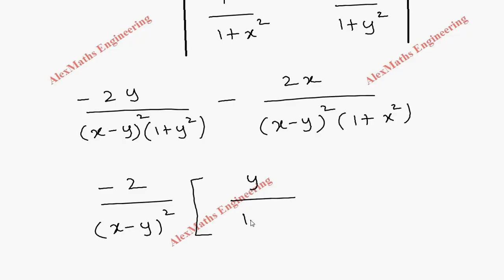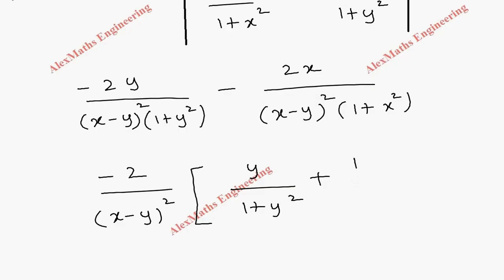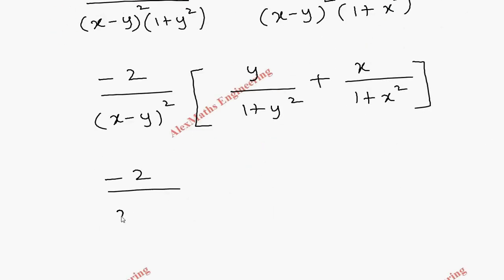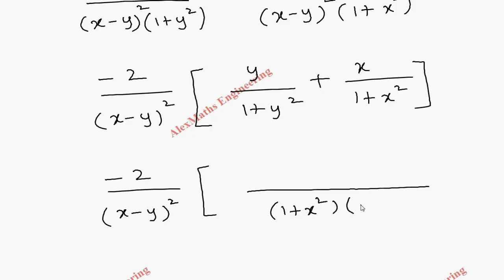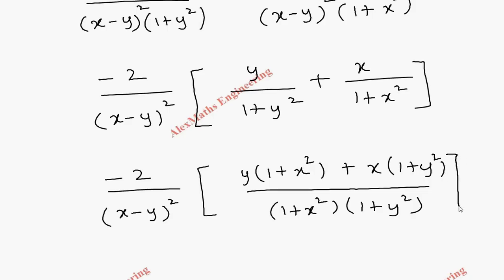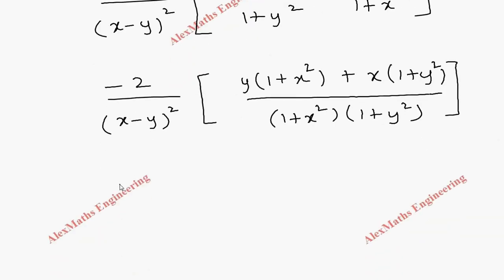After taking minus 2 common and (x minus y)² in the denominator, we are left with y by (1 plus y²) and, since minus is taken common, the next term becomes plus x by (1 plus x²). Taking the LCM as (1 plus x²)(1 plus y²), the numerator becomes y(1 plus x²) plus x(1 plus y²).